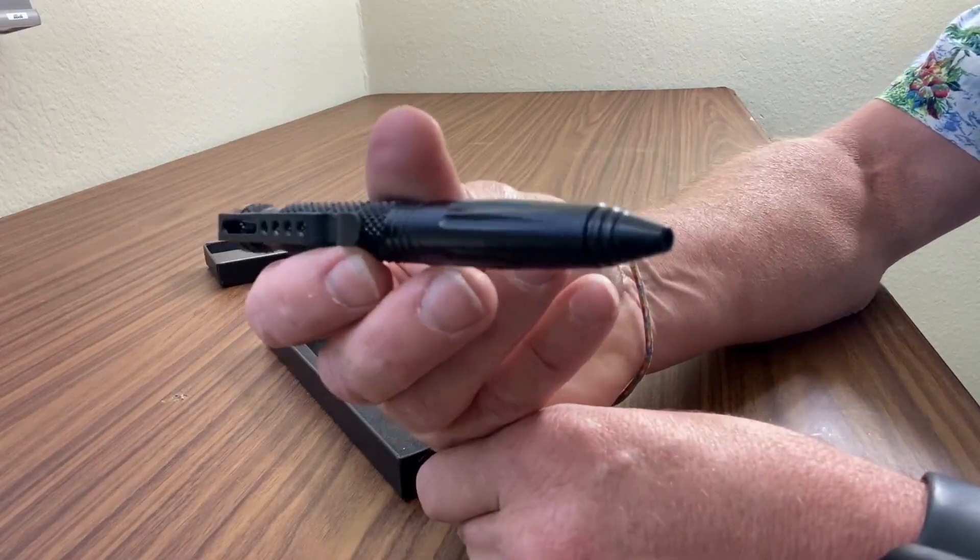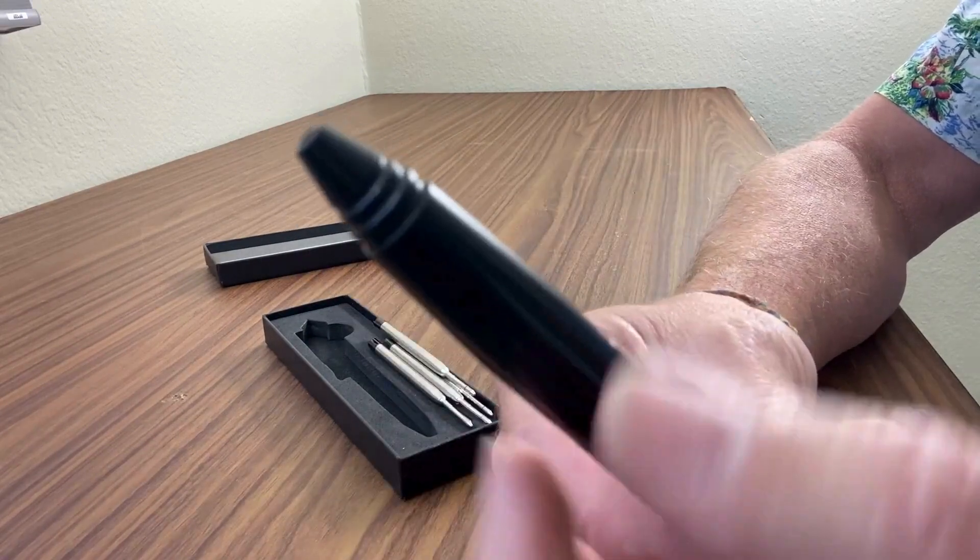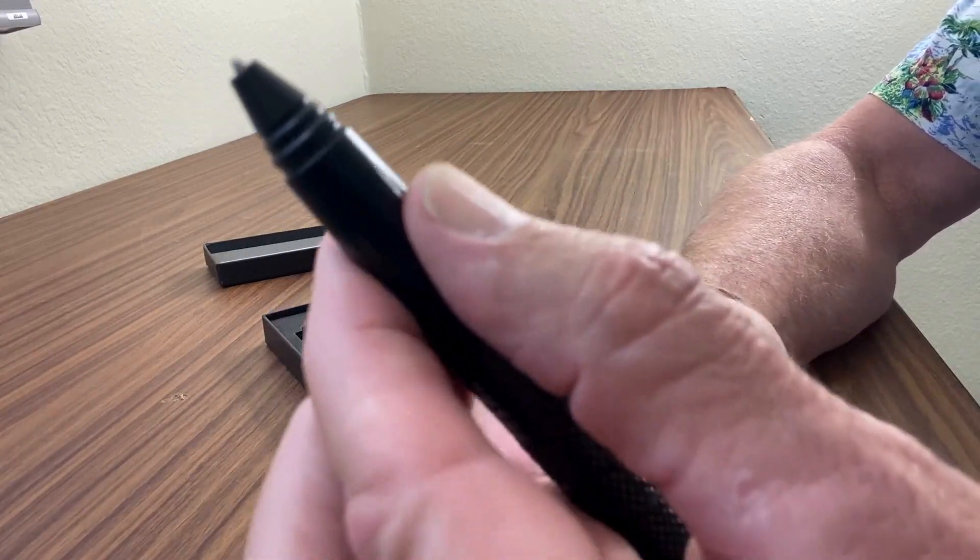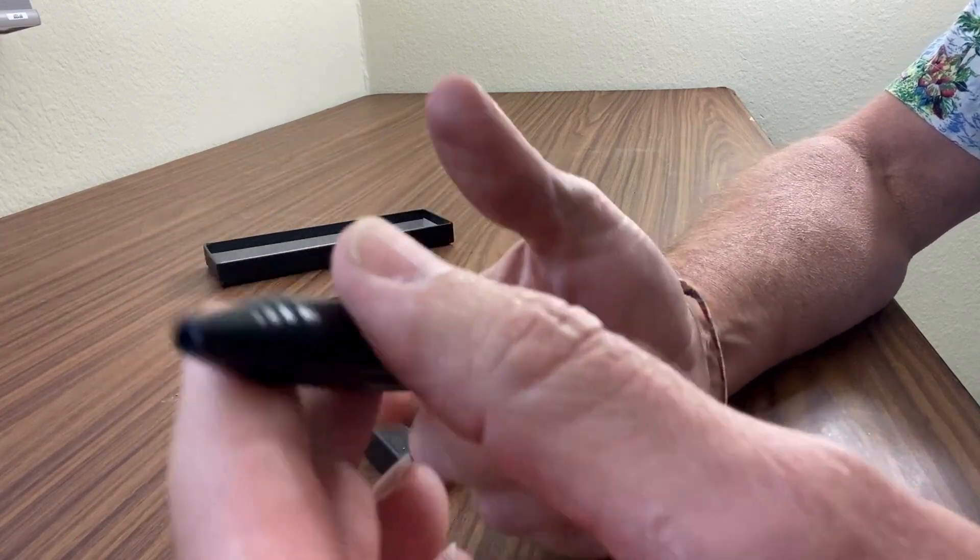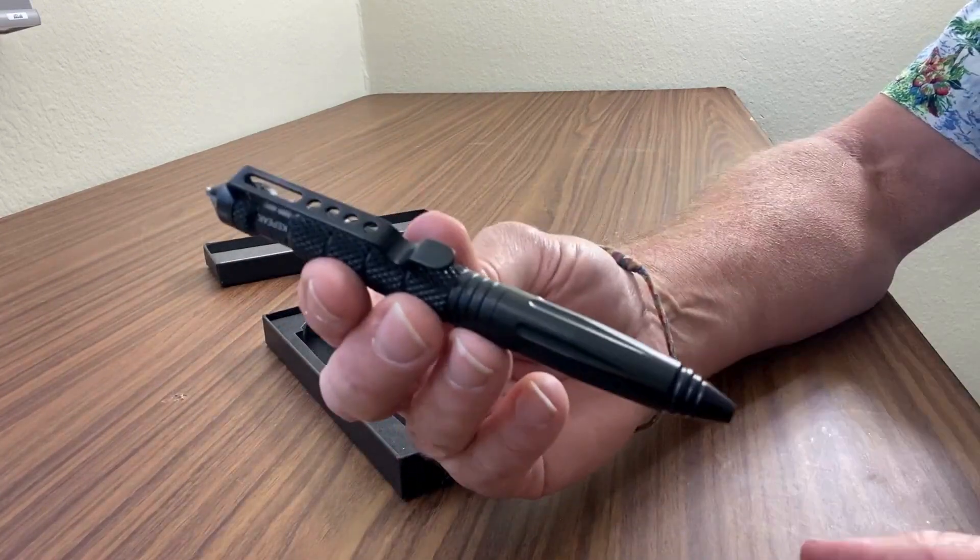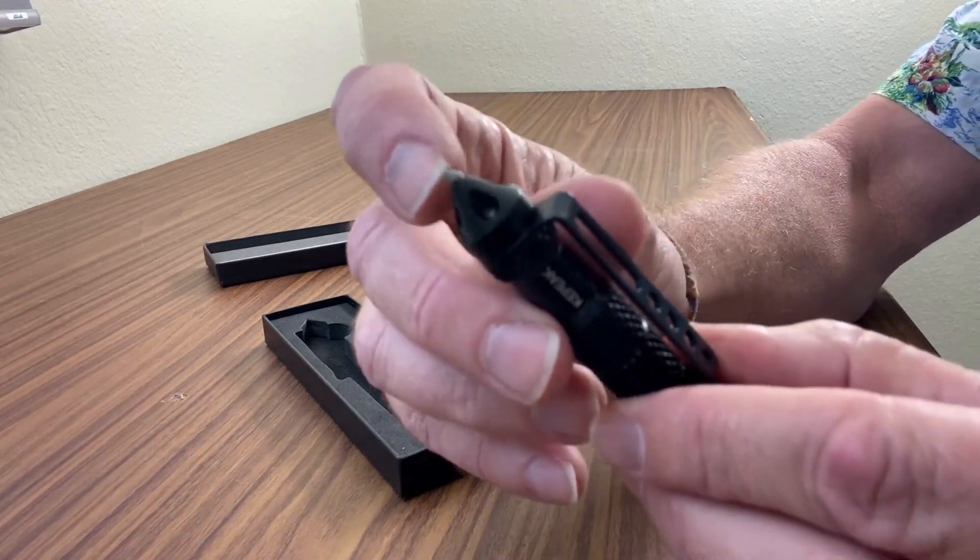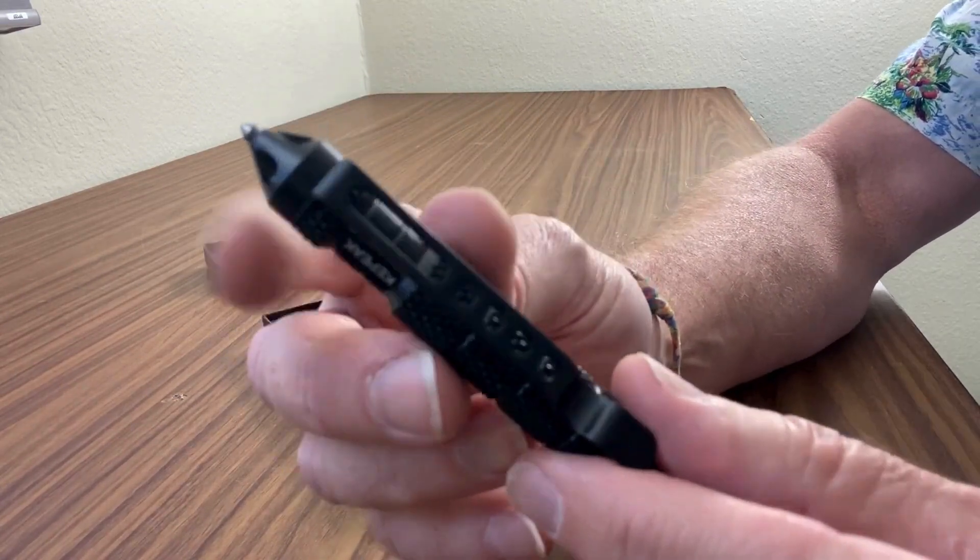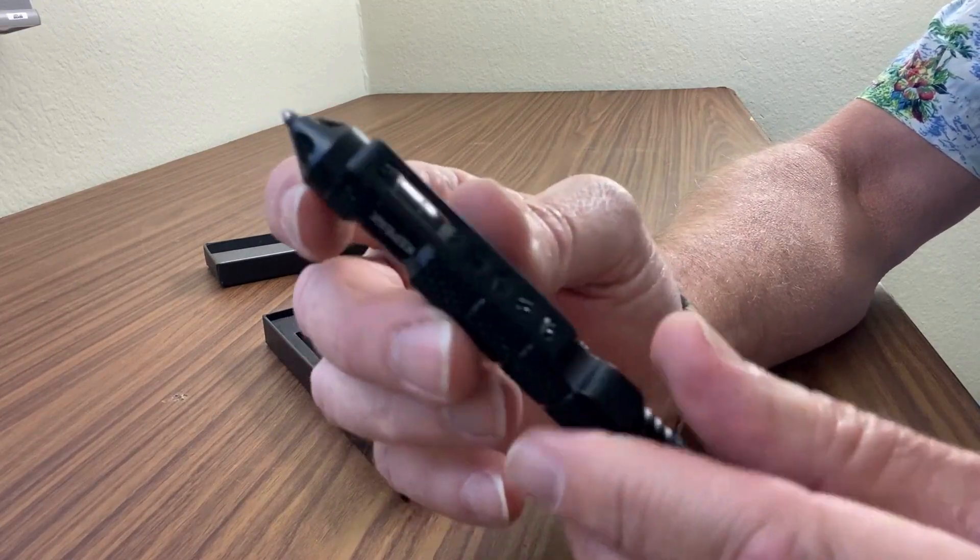So first of all, quick overview. It's a regular writing pen. You twist the barrel here and a little writing tip will come out. It's got a clip here to clip onto something, but the coolest thing is that this end is the emergency glass breaking tool. This allows you to escape your car in an emergency.